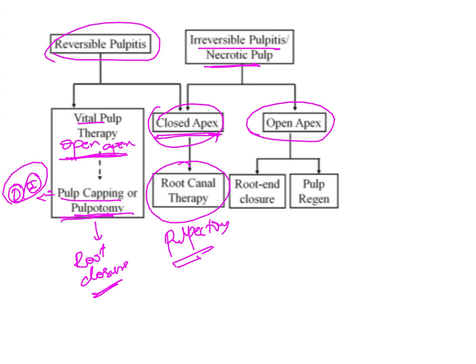In those cases with an open apex and irreversible/necrotic pulp, we will go for apexification, which causes the formation of a root barrier at the end of the roots, or pulp regeneration therapies. These are the different indications for the different types of pulp therapies.